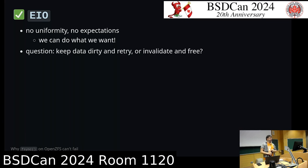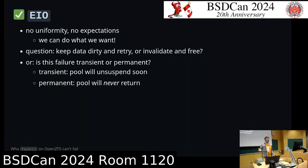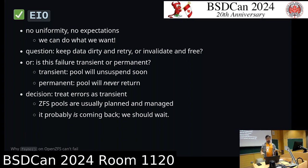There's no real uniformity, so we can do whatever we want. Applications using ext4, UFS, and others use the operating system facilities and already don't have a particular expectation of things working well — they're probably already losing data in this scenario. The real question was: do we keep the data around, keep it dirty and retry next time, or do we invalidate and free it? Is the failure transient or permanent? Transient means the pool's going to come back soon; permanent means it probably never will. We decided transient — serious ZFS pools are big, managed, planned. It's probably coming back, you're monitoring it, you're fixing it. So it's better to hold on to that data in memory until it comes back rather than block fsync.